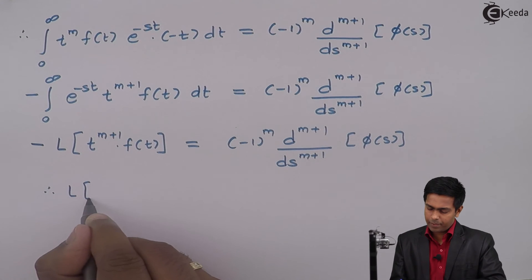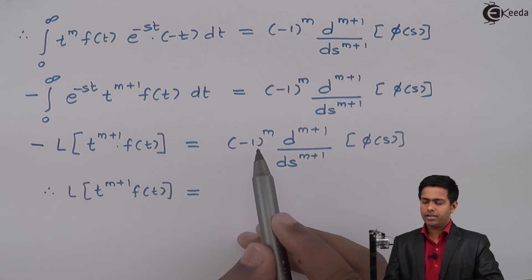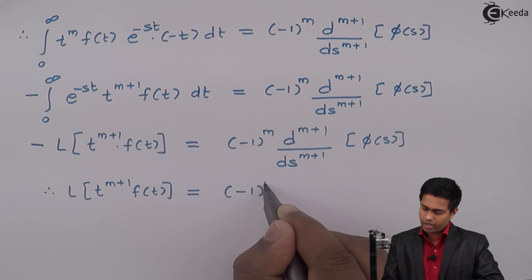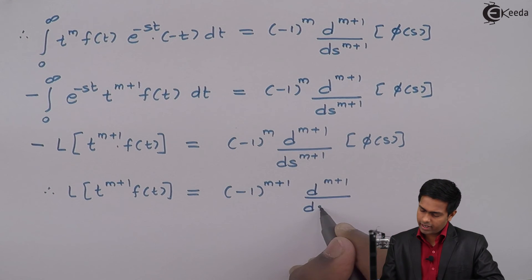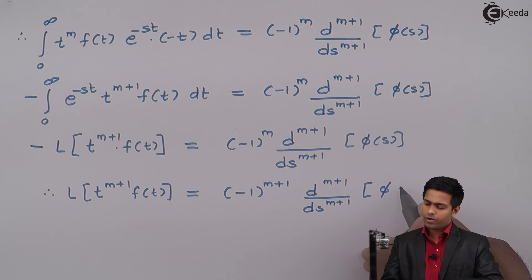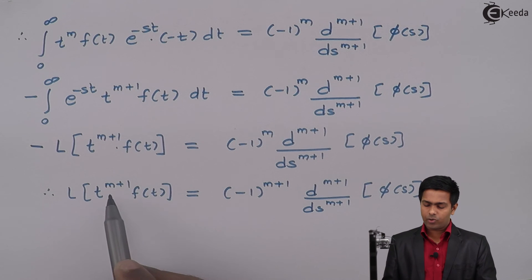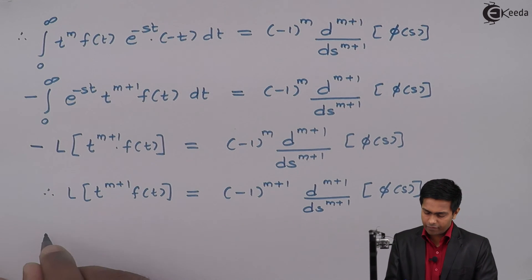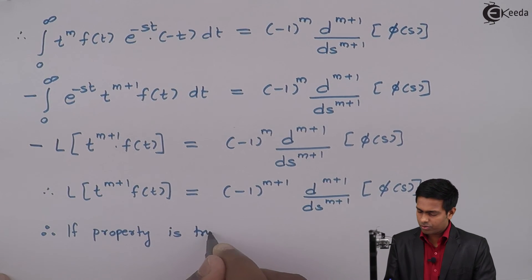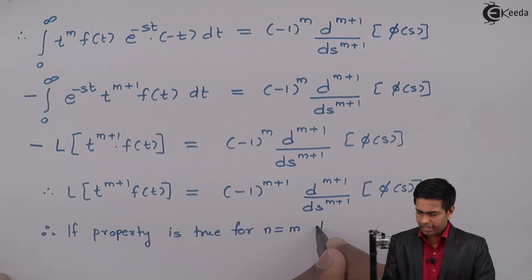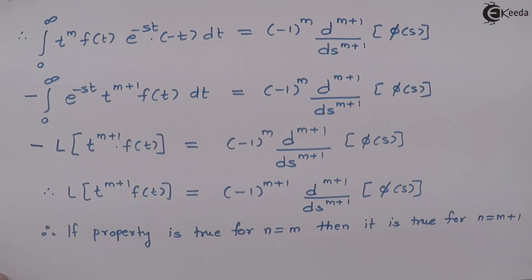Therefore L{t^(m+1) · f(t)} = (−1)^(m+1) · d^(m+1)/ds^(m+1) φ(s). We have obtained the same statement with n equal to m+1. Therefore, if the property is true for n equal to m, then it is also true for n equal to m+1.